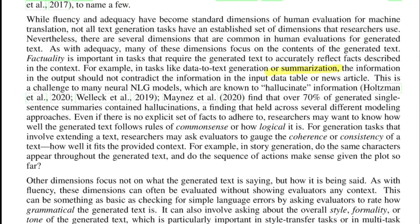For summarization systems or systems generating text from data or tables, factuality is a key parameter — checking whether facts mentioned in the input are portrayed correctly in the output. For example, if a news article mentions the year 1957 but the model outputs 1928 in an incorrect context, that output is factually wrong. In such cases, a copy mechanism is often used to decide between generative mode and copying certain pieces of text from the input. Studies found that 70% of generated single-sentence summaries contained hallucinations — factually incorrect information.